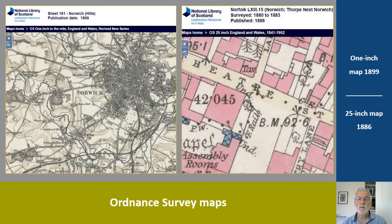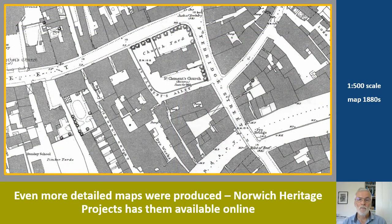The most comprehensive source of old Ordnance Survey maps online is the National Library of Scotland website, and those most likely to be of use to historians are from the 1-inch-to-the-mile map in increasing detail down to the 25-inch-to-the-mile. Even more detailed maps were produced by the Ordnance Survey in the late 19th century at a scale of 1 to 500, and Norwich Heritage Projects has them available online.